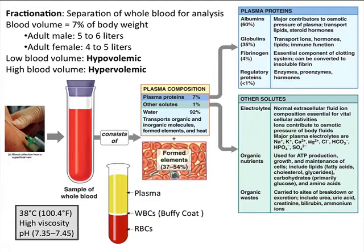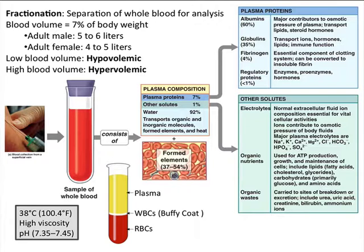A couple of characteristics of whole blood: your blood likes to be at about 100 degrees Fahrenheit — 38°C. It has very high viscosity because of its high osmolarity with all these solutes. The pH is slightly alkaline — your blood likes to be in a very narrow window of 7.35 to 7.45, and it doesn't want to be outside that range.